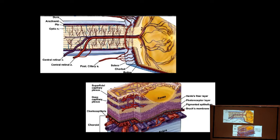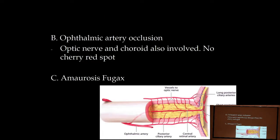Contrasting with ophthalmic artery occlusion: now we have diffuse retinal ischemia, but also loss of blood flow to the posterior ciliary artery including the choroid. So in an ophthalmic artery occlusion, the patient is blind but won't have a cherry red spot. Amaurosis fugax is retinal emboli from the carotid artery — patients have a painless cloud or curtain pulled down over the eye, but it's a TIA, so the clot breaks up and vision is restored. Order a carotid ultrasound for that story.